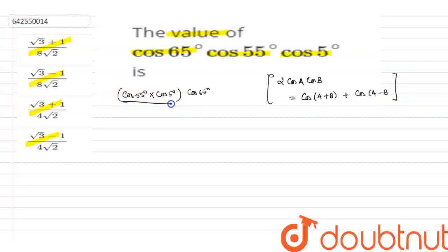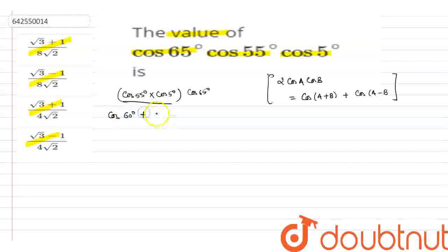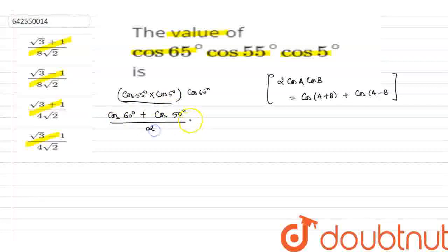We apply this formula to the first two terms. This gives us cos(55°+5°) + cos(55°−5°), which is cos(60°) + cos(50°), divided by 2, multiplied by cos(65°).